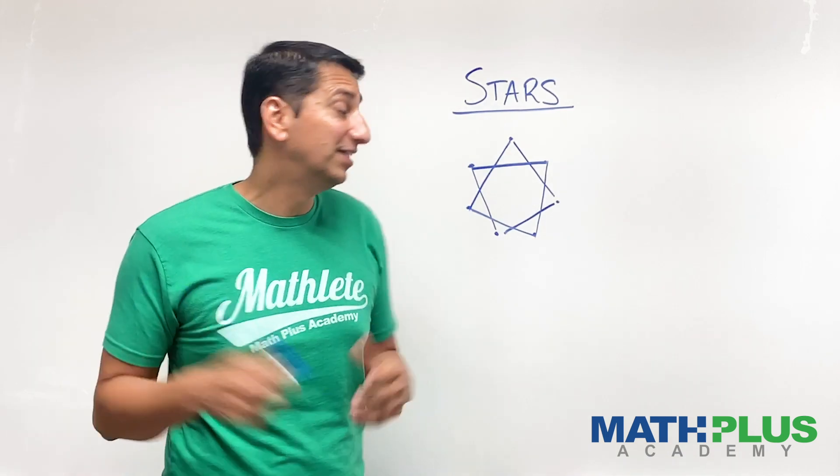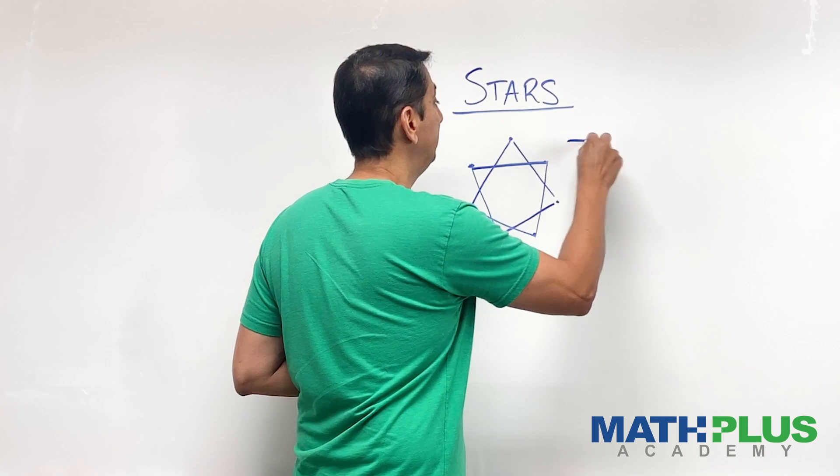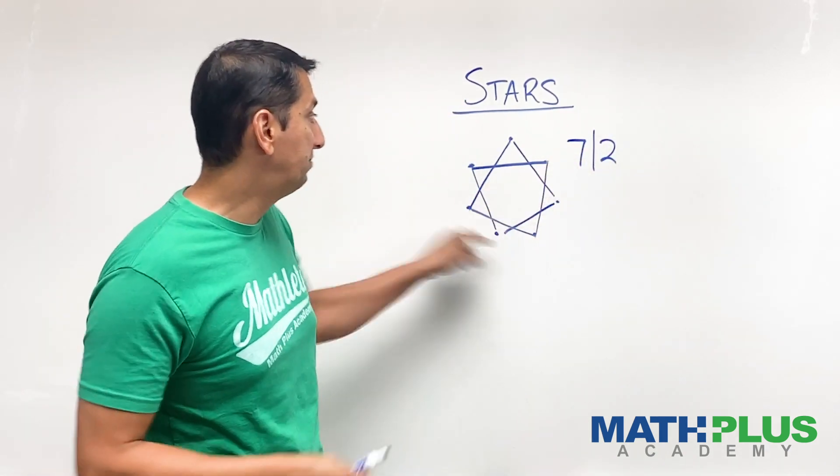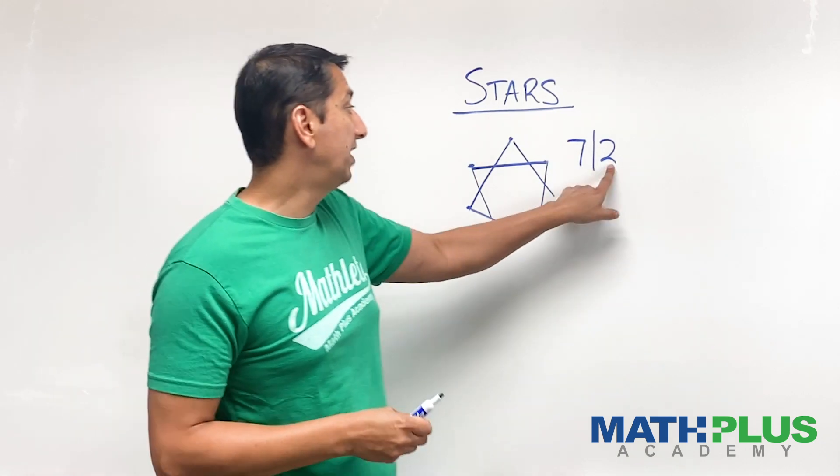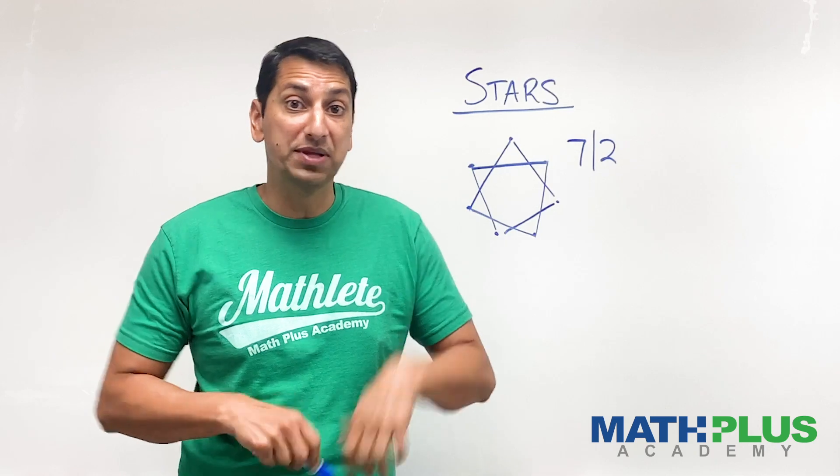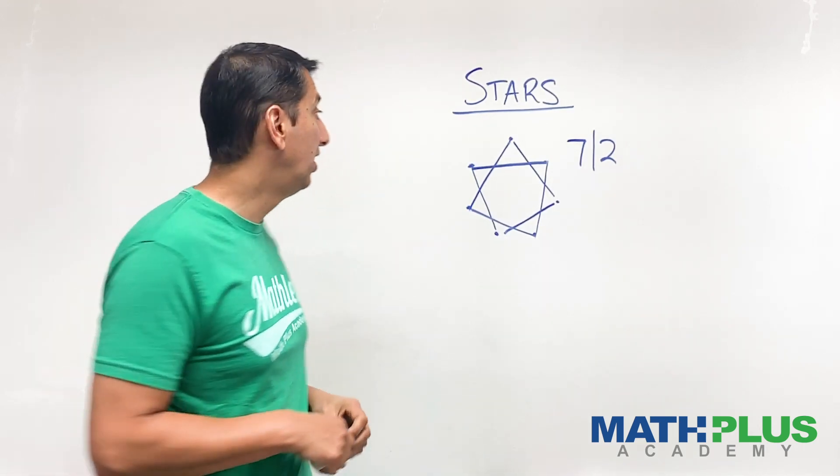And this game, we're going to call the seven two game. Seven people or seven dots, and every second person is our rule for connecting the dots or throwing the ball from one person to another.